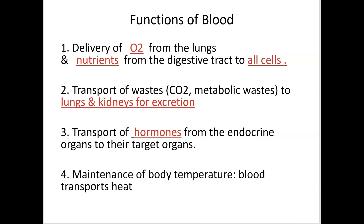So why do we have blood? It's very important for transport. It delivers oxygen from your lungs and nutrients from your digestive tract to all cells of the body. It also eliminates waste — it picks up CO2 and metabolic waste like urea and creatine and brings them back. CO2 is excreted at the lungs and all other waste mainly at the kidneys.